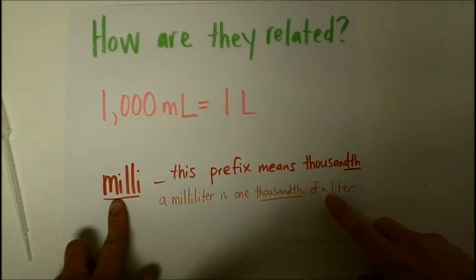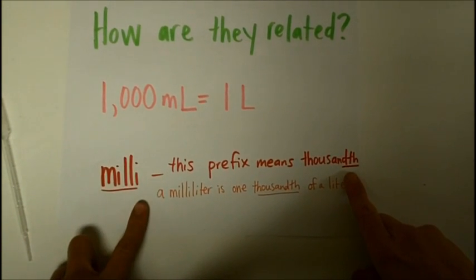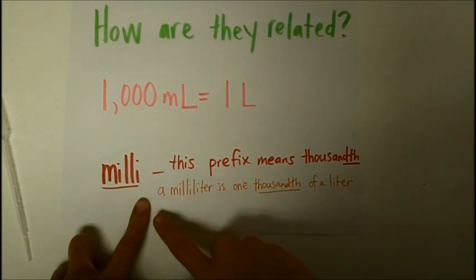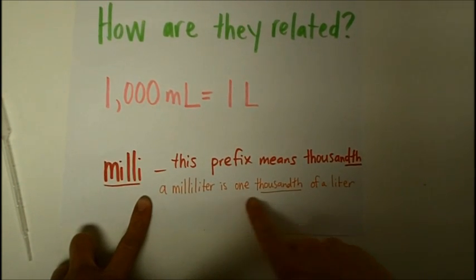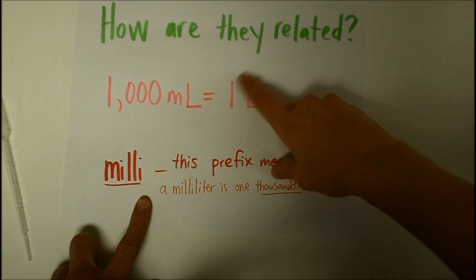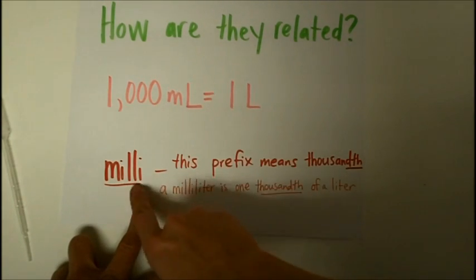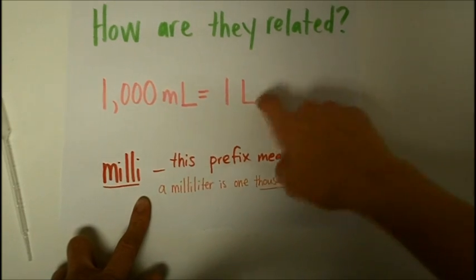This prefix 'milli' means thousandth, with a th, a decimal. So a milliliter is one-thousandth of a liter. The liter is the main unit, and then when you add this prefix 'milli', that means take one-thousandth of the main unit.